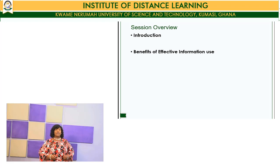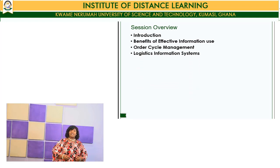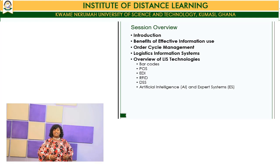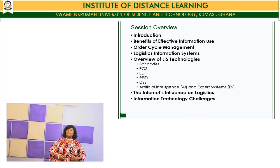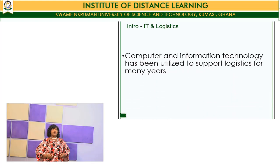In this session specifically, we will have a brief overview, look at the benefits of information use, effective information usage, and order cycle management. We are also looking at logistics information systems and will have an overview of logistics information system technologies. We'll look at barcodes, POS, EDI, RFID, DSS, and artificial intelligence. Then we'll look at the internet's influence on logistics and some information technology challenges faced when managing the logistics process.